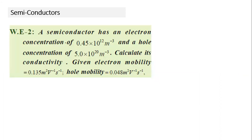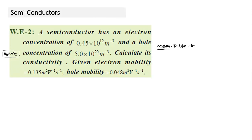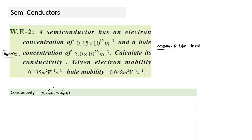In a practice problem, electron concentration and hole concentration are given. Since NH >> Ne, this is a P-type extrinsic semiconductor with trivalent (acceptor) impurity added. To calculate conductivity: σ = e(Ne·μe + NH·μh). Note that μe > μh. In P-type, holes are the majority charge carrier and dominate the current. Substituting the given values and mobilities gives the conductivity directly.